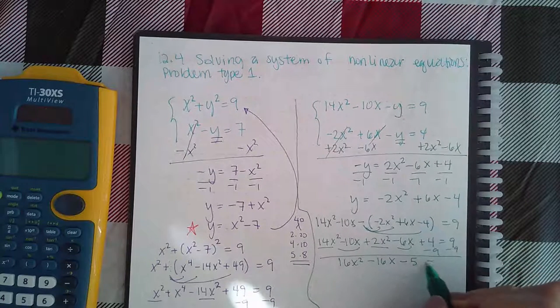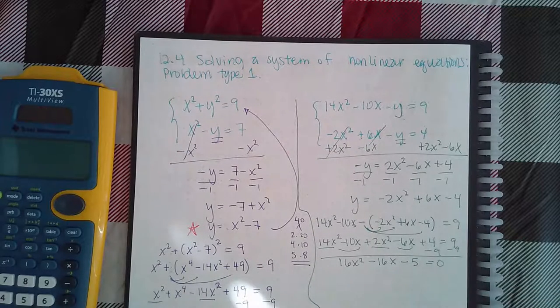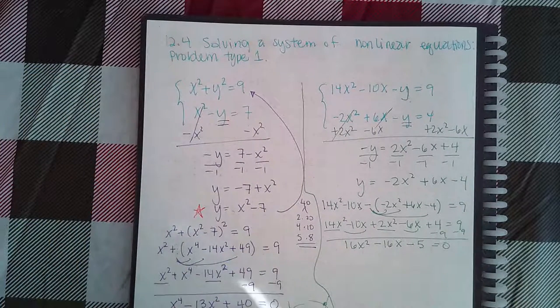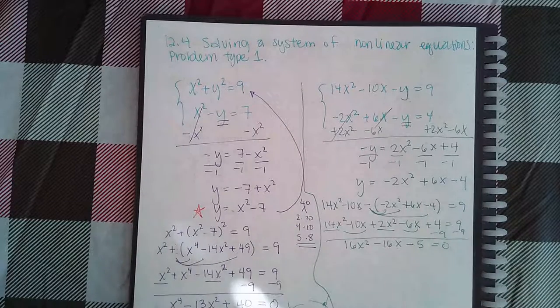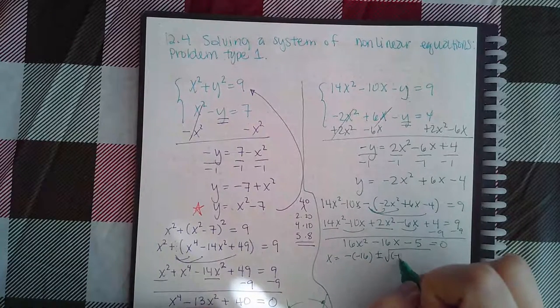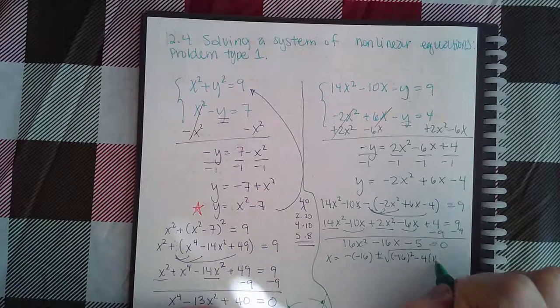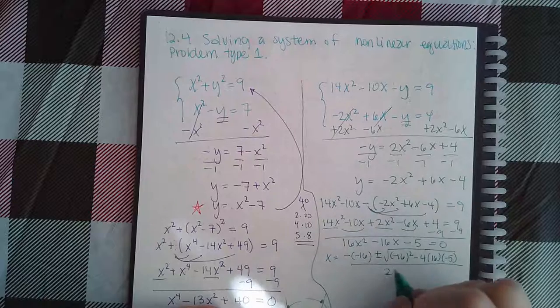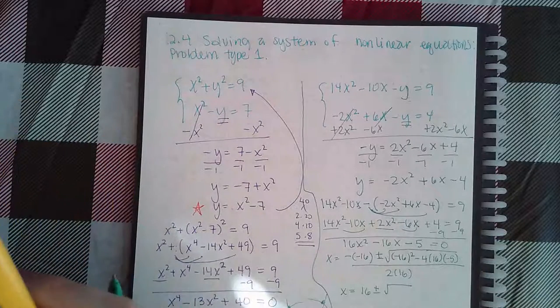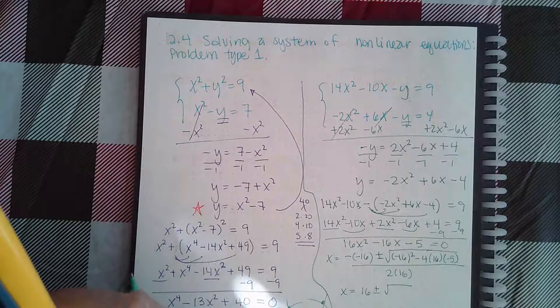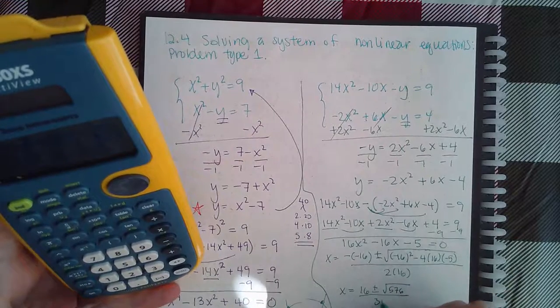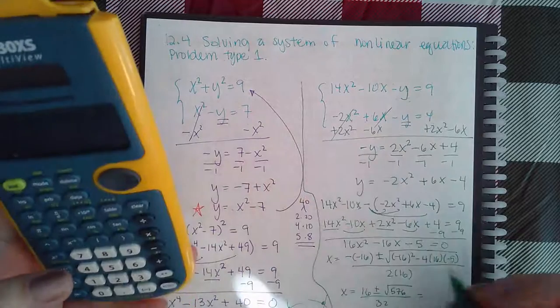I get 16x² minus 16x minus 5 equal to 0. You would either factor this or use the quadratic formula. I am actually going to do the quadratic formula because that seems too complicated to try to factor. So x equals negative b plus or minus the square root of b² minus 4ac all over 2a. I get negative 16 squared minus 4 times 16 times negative 5, so that gives me 576 over 32. The square root of 576 is 24.